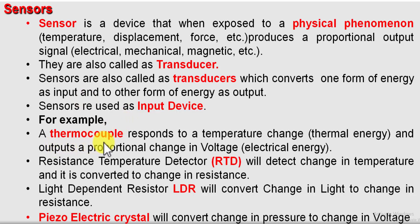Take an example of a thermocouple. The thermocouple responds to temperature change, and this change in temperature is converted into voltage, which is an electrical quantity. Another is RTD — resistance temperature detector — it converts change in temperature to change in resistance. The next is LDR — light dependent resistor — which converts change in light to change in resistance. And piezoelectric crystal which converts change in pressure to voltage. So these were a few examples of sensors.